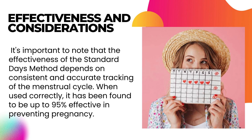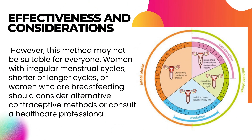Effectiveness and considerations: It's important to note that the effectiveness of the standard days method depends on consistent and accurate tracking of the menstrual cycle. When used correctly, it has been found to be up to 95% effective in preventing pregnancy. However, this method may not be suitable for everyone — women with irregular menstrual cycles, shorter or longer cycles, or women who are breastfeeding should consider alternative contraceptive methods or consult a healthcare professional.